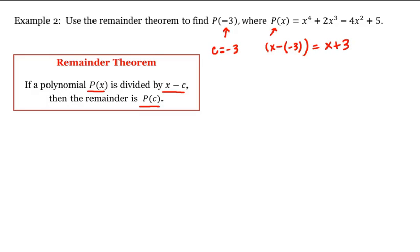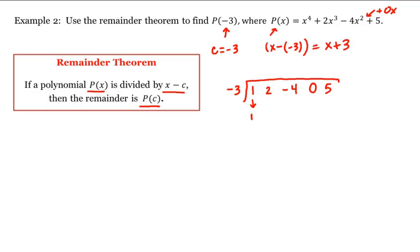We could use long division or synthetic division — let's use synthetic division. We write our c, negative 3, and then put all the coefficients of p: 1, 2, negative 4. Be careful here — it's mandatory that we hold the place of the x term and write plus 0x, so we have a 0, and then our 5. Drop the 1. Negative 3 times 1 is negative 3; we add to get negative 1. Multiply to get 3; add to get negative 1. Multiply to get 3; add to get 3. Multiply to get negative 9.